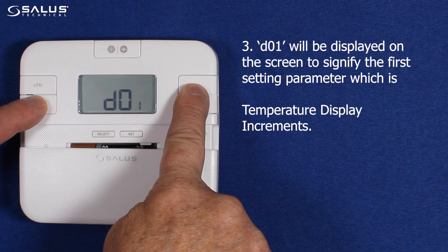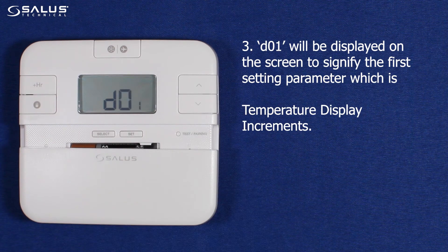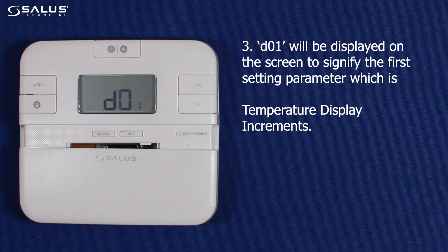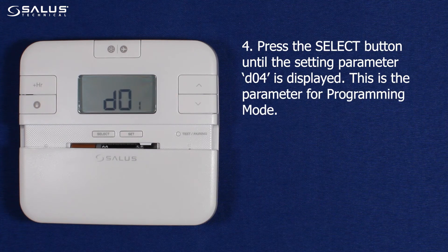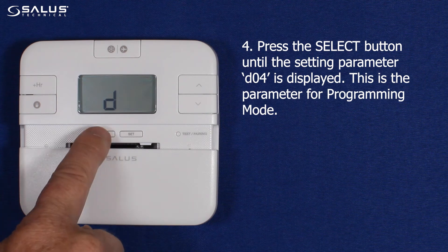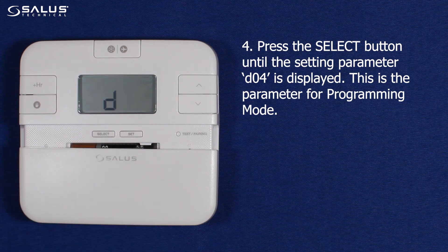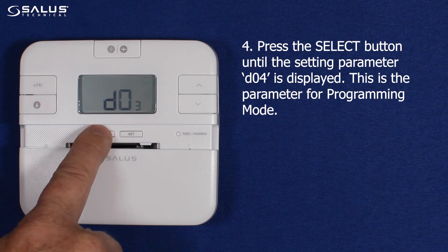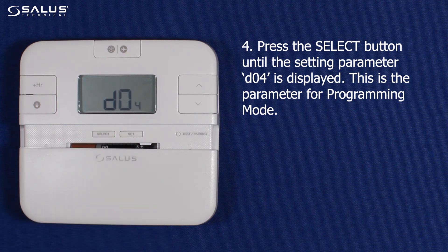Step 3: D01 will be displayed on the screen to signify the first setting parameter, which is temperature display increments. Step 4: Press the select button until the setting parameter D04 is displayed. This is the parameter for programming mode.